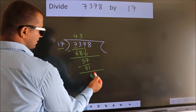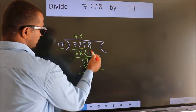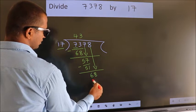After this, bring down the next number. So 8 down. So 68.